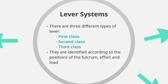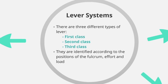There are three different types of lever typically used within the body: first class, second class, and third class lever systems. They are all identified according to the positions of the fulcrum, effort and load.